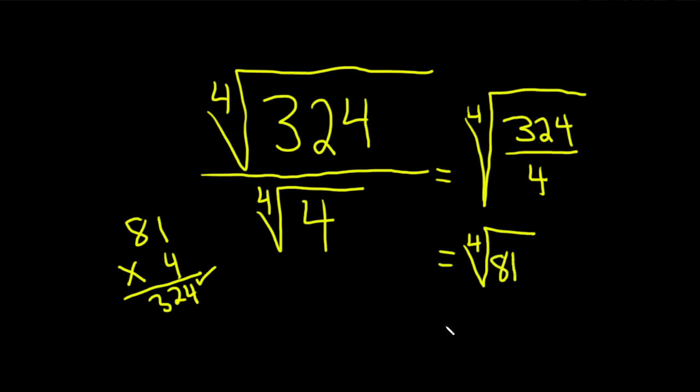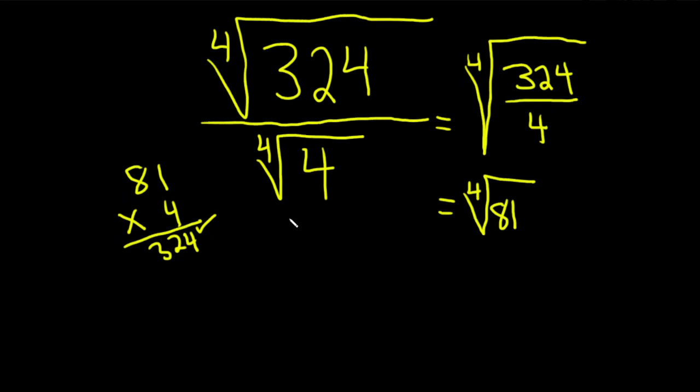Now 81 can be written as 3 to the fourth power, because it's really 9 times 9. 81 is 9 times 9, which is the same thing as 3 squared times 3 squared. So that's 3 to the fourth.